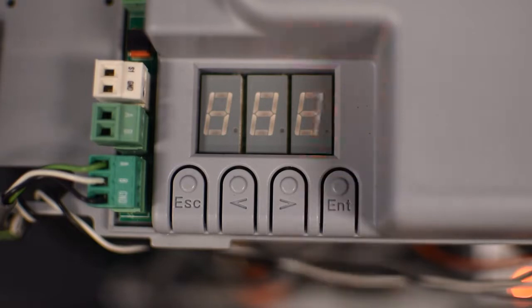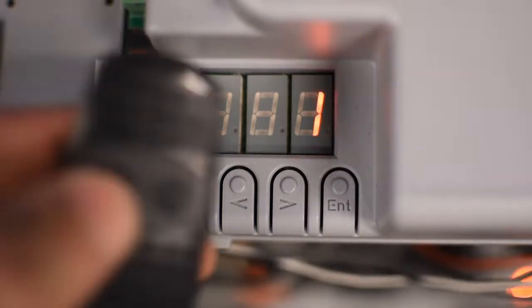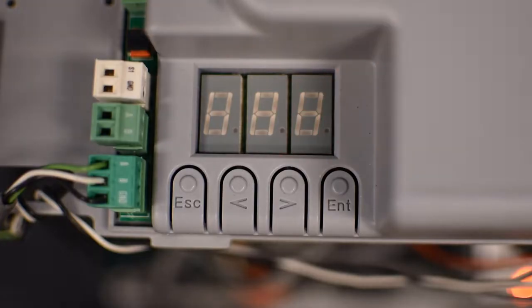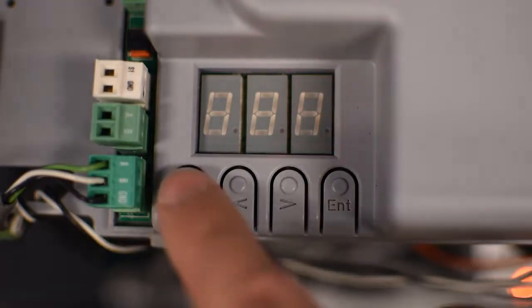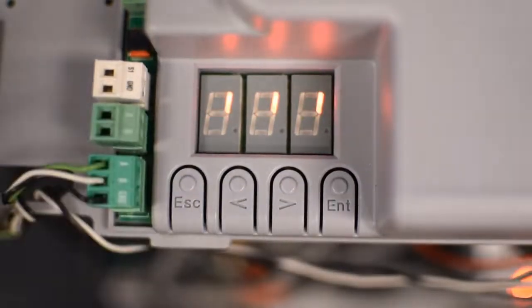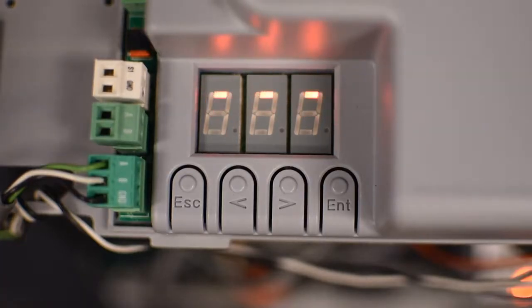Then a number is going to blink indicating that it's ready to receive the signal from the remote control. So press the button you wish to program. That signal is going to be stored in the user number that was blinking before. In this operator we can store up to 250 users.